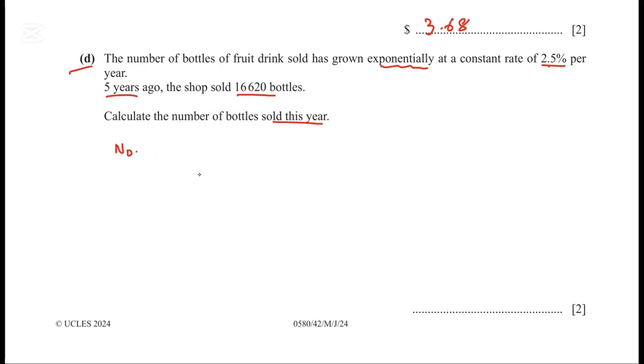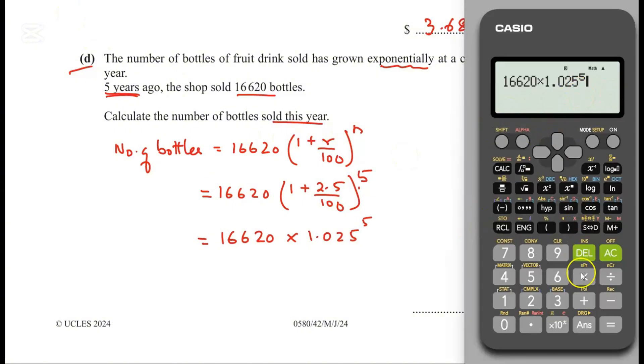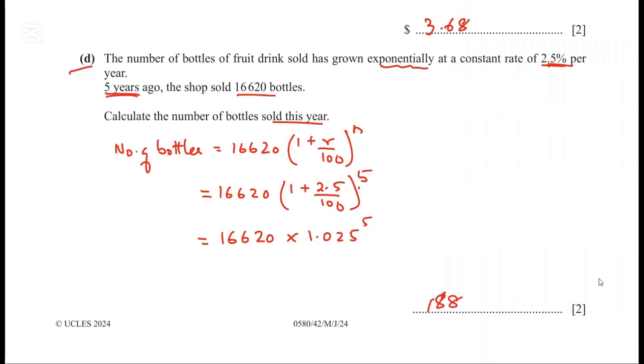The number of bottles this year equals 16,620 times (1 plus r/100) to the power of n, where n is the time, 5 years, and r is the rate, 2.5. That's 16,620 times (1 plus 2.5/100) to the power of 5, which equals 16,620 times 1.025 to the power of 5, giving us 18,804 bottles.